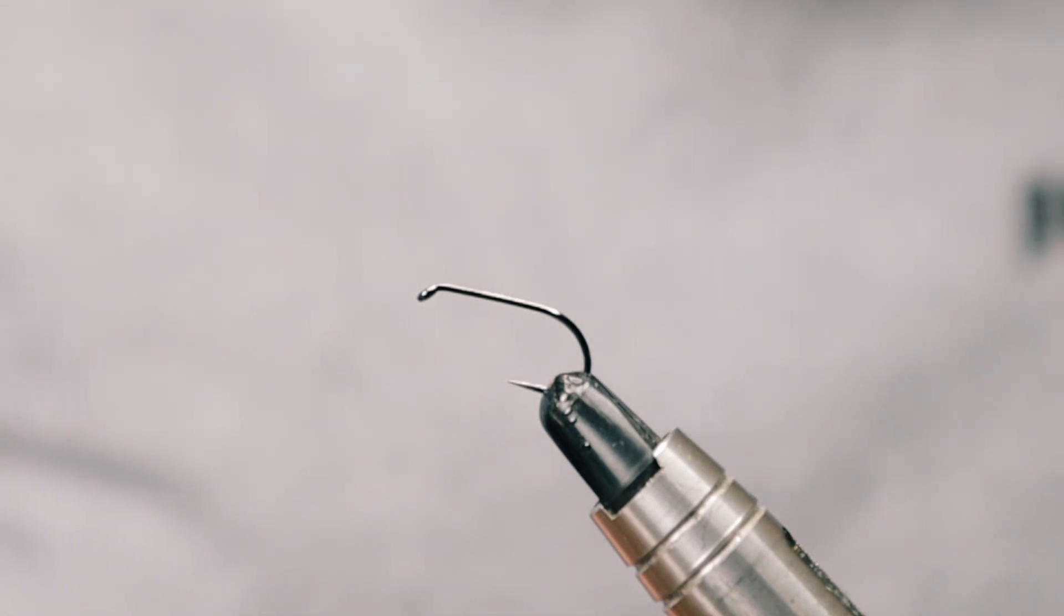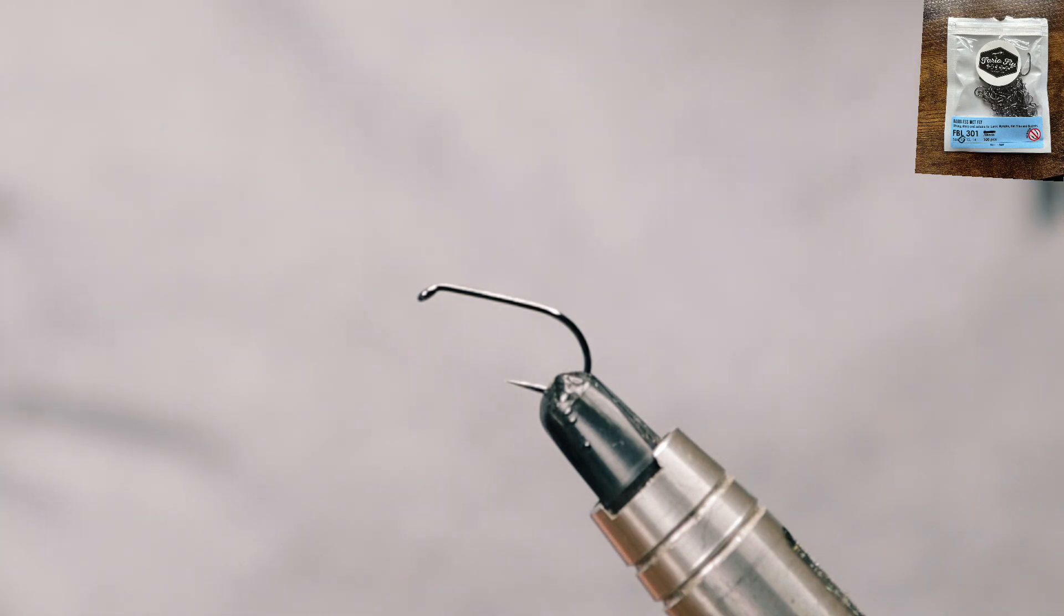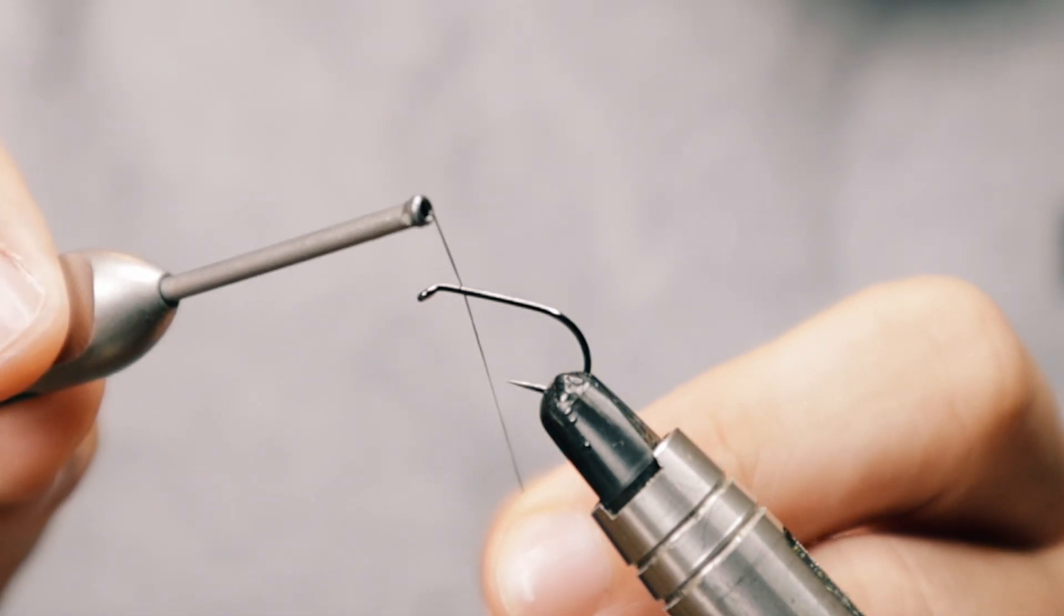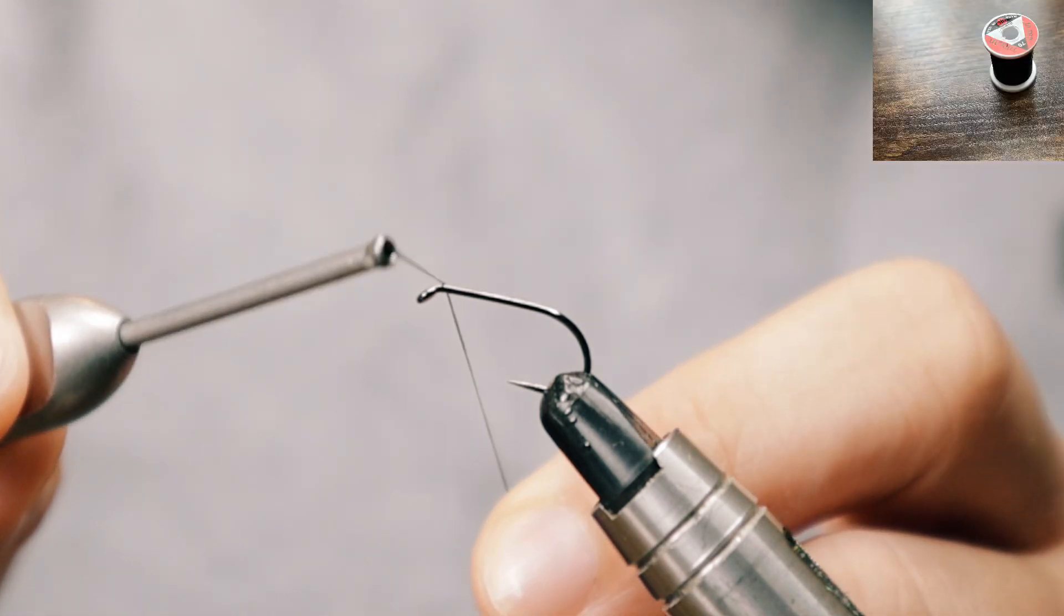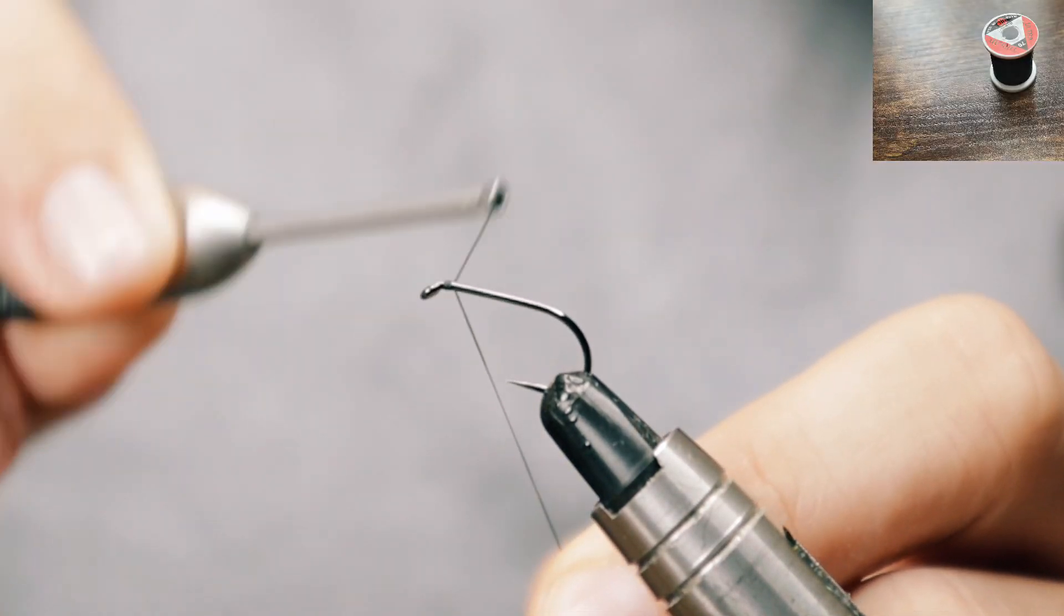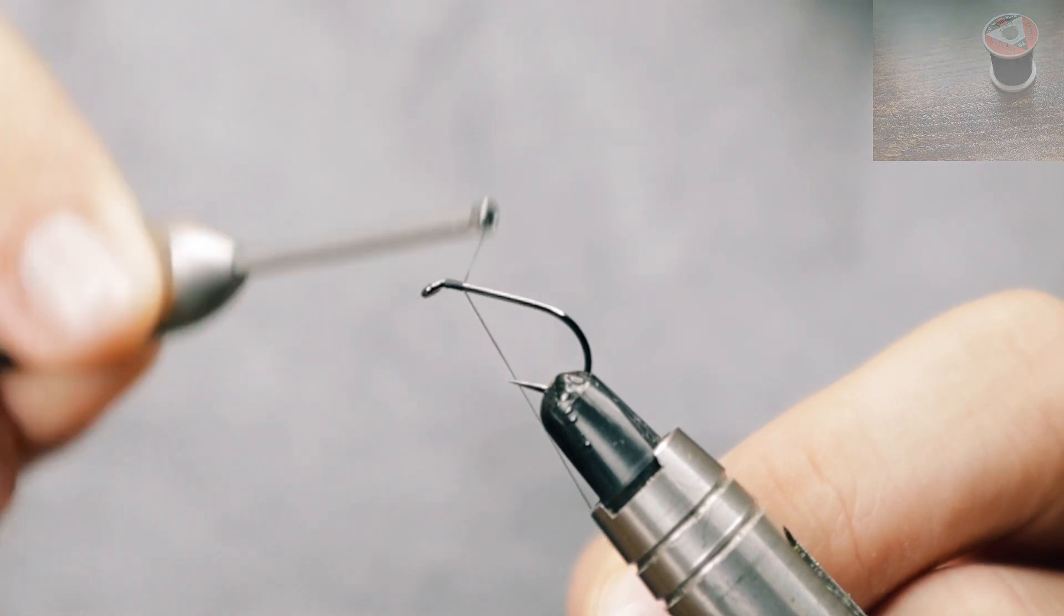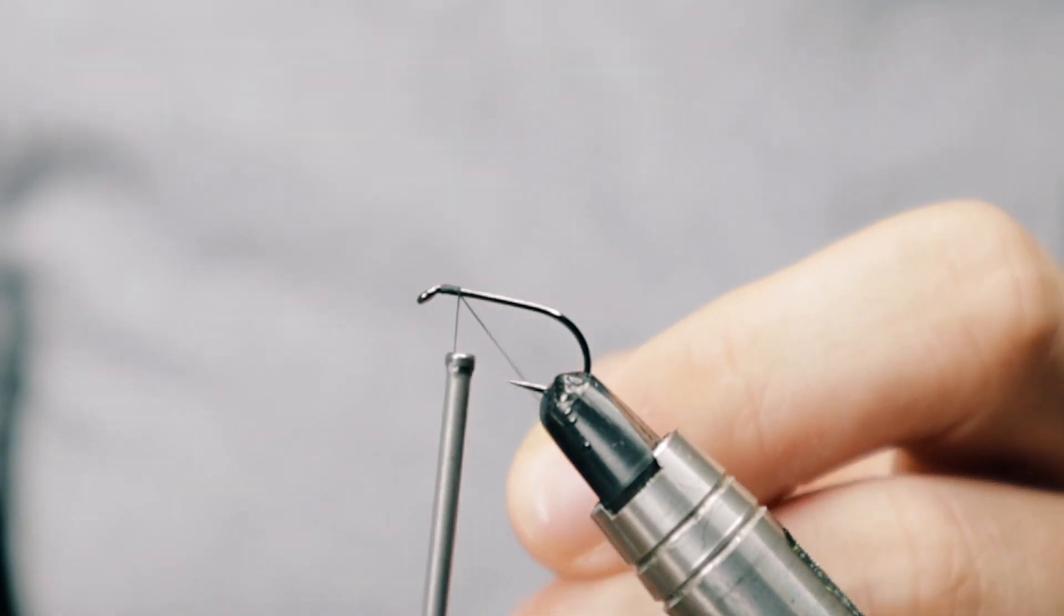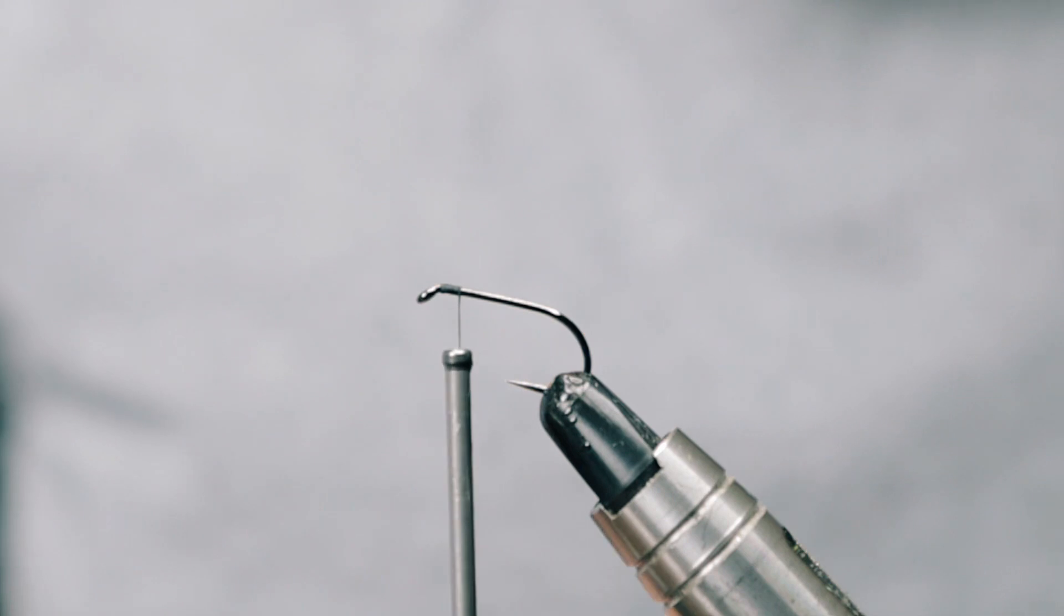So we've got a size 10 barbless Firehole device and got some black UTC 70 thread on the go. Just going to come in and catch behind the eye, wind down a little bit, and come in and chop away that end piece.